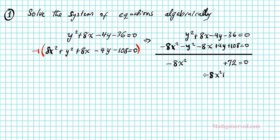-8x² + 72 = 0. So how do we solve this resulting quadratic equation? Let's get x² isolated. Subtract 72 from both sides. You have -8x² = -72. Divide both sides by -8.